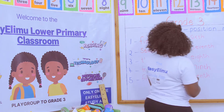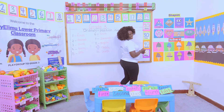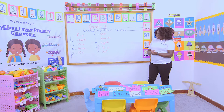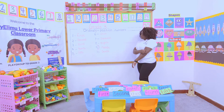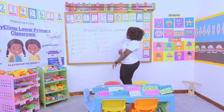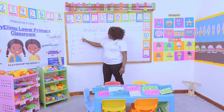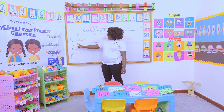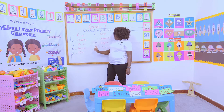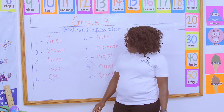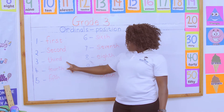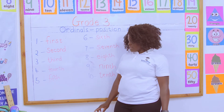Ordinals. You are still there. Now, we did the ordinals for the number one and we said the ordinal name is first. The number is two and the ordinal name is second. The number is three and the ordinal name is third.